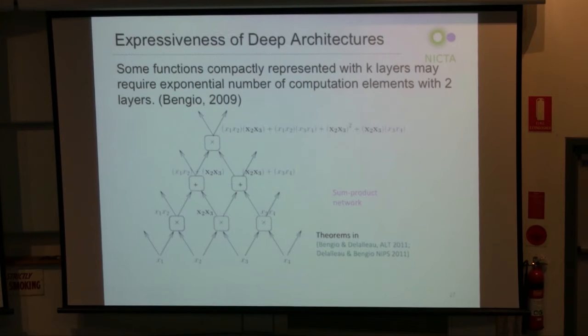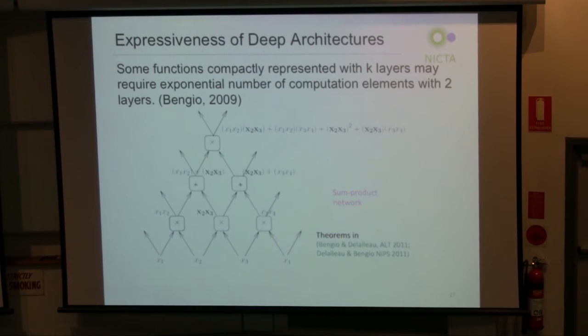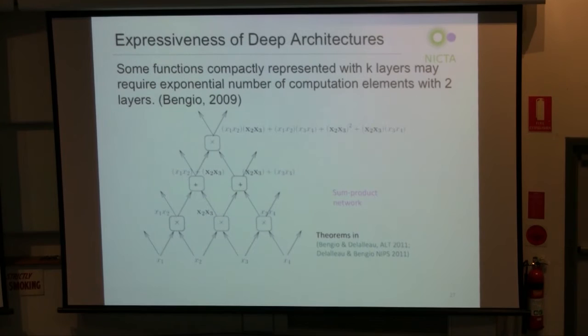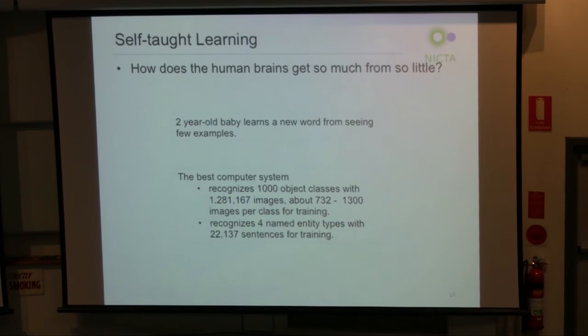Another conclusion: if we want to represent a polynomial, using a product network where each layer does either an AND operation or a SUM operation, we can directly represent the polynomial and reuse many primitive elements. If we use shallow layers instead, we'd have to multiply everything out and end up with a polynomial number of terms to represent the same polynomial. This is further evidence that deep architectures can be more expressive than shallow architectures.